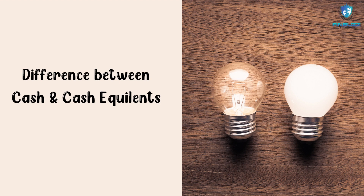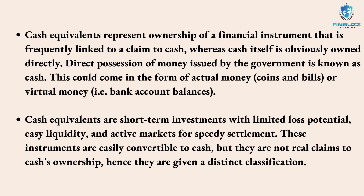Although cash and cash equivalents are combined in the balance sheet account, there are a few key distinctions between the two. Cash equivalents represent ownership of a financial instrument frequently linked to a claim to cash, whereas cash itself is the direct possession of money issued by the government — in the form of actual money such as coins and bills, or virtual money like bank account balances. Cash equivalents are short-term investments with limited loss potential, easy liquidity, and active markets for speedy settlements. These instruments are easily convertible to cash but are not real claims to cash ownership, hence they are given a distinct classification.